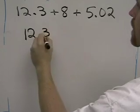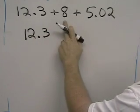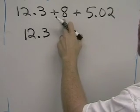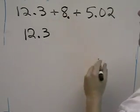So 12.3. Now 8 doesn't have a decimal point, but it actually does. Whenever a number doesn't have a decimal point, automatically the decimal goes at the end.